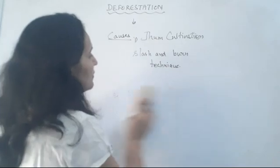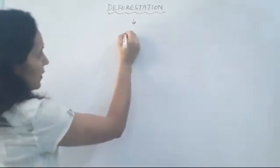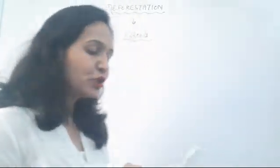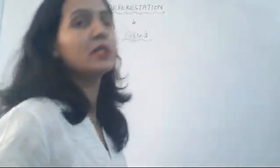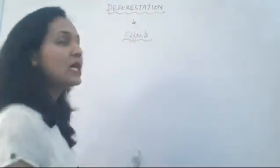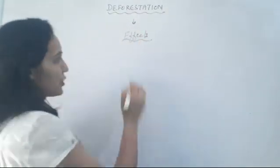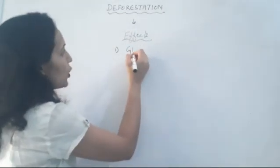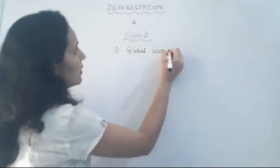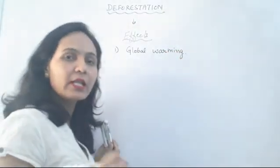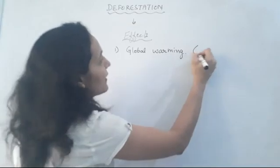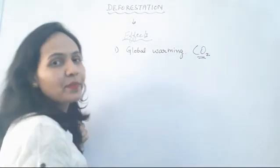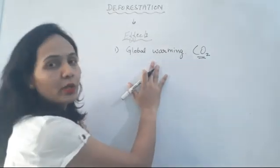Next we will discuss the effects of deforestation — what happens to the environment due to deforestation. The first effect is global warming. If there are no trees, CO2 in the environment increases, which leads to an increase in temperature globally. That is global warming.